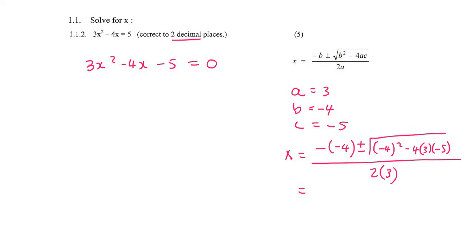Then you would go ahead, type this in on the calculator. I'm going to use a plus first, and then after that, I'll choose a negative. And so the two answers that we get would be 2.12 or -0.79.